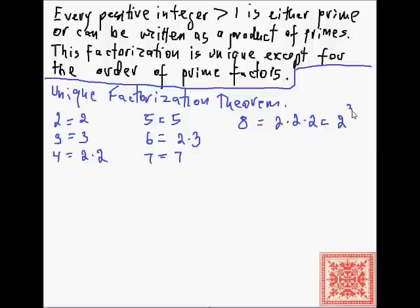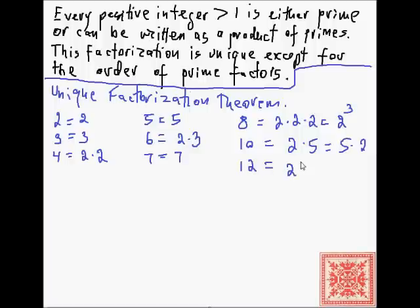8 is 2 to the third. 10 is 2 times 5, or 2 to the first times 5 to the first. We can rearrange it as 5 times 2, but it doesn't change the uniqueness of the prime factors. 12 is 2 to the second times 3, and 120 is equal to 2 to the fourth times 3 times 5 to the second.